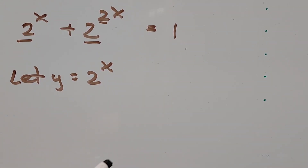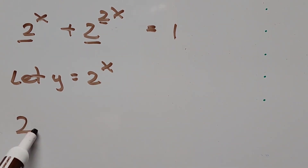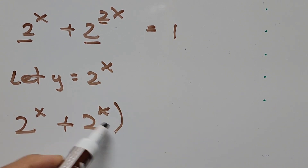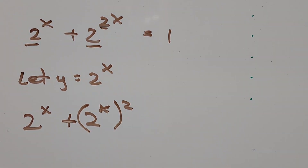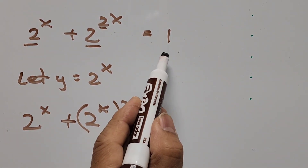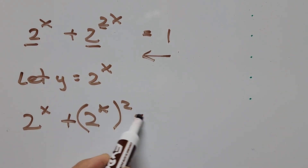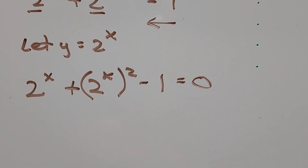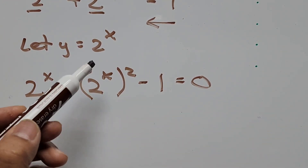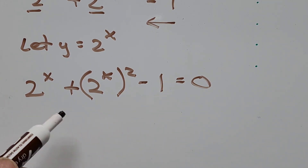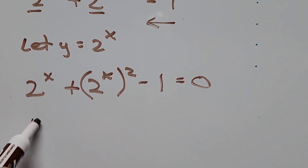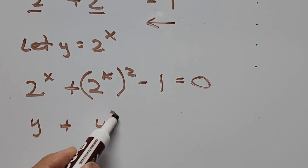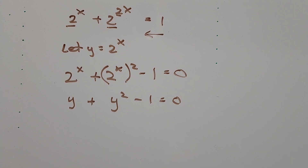So the equation can be written the same way as 2 to the power of x plus 2 to the power of x, squared. And transposing 1 to the left side of the equation, this becomes negative 1 equals 0. So we're using the new variable y to stand for 2 to the power of x.